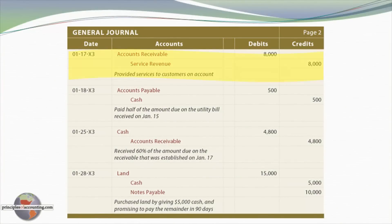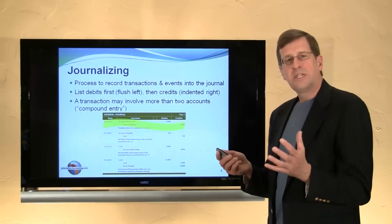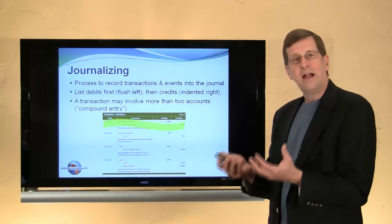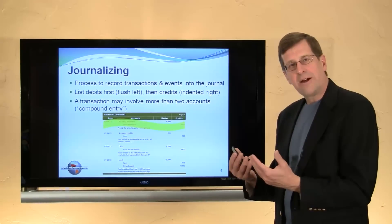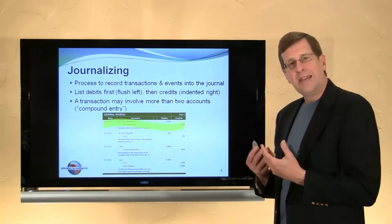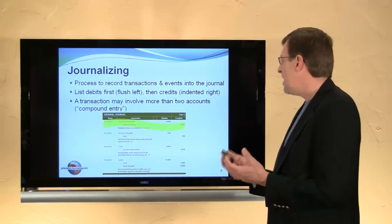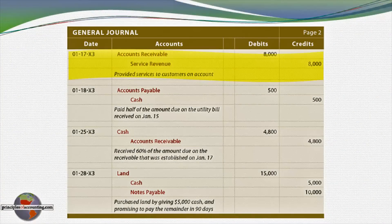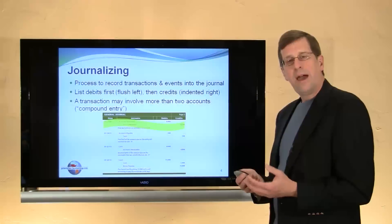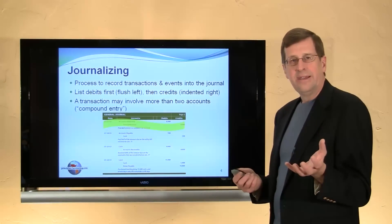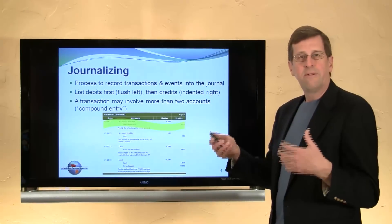Here's our general journal. On January 17th, we look at a transaction where we provided services to customers on account. Accounts receivable is increasing — we are now entitled to receive payment. Debits increase assets, accounts receivable is an asset and is increasing, therefore we are debiting accounts receivable. It's left justified and the $8,000 amount is recorded in the debit column. Service revenue is right indented and listed in the credit column. Providing the services increased our asset and also increased revenues reflected in the income statement.